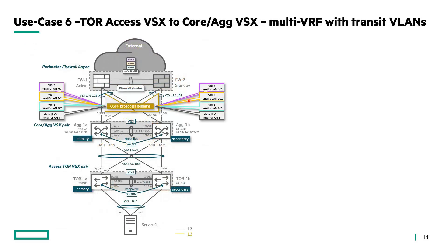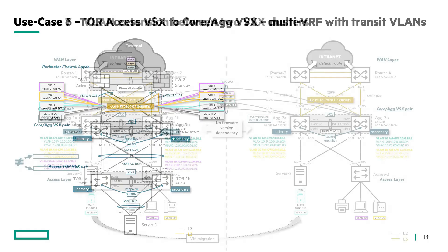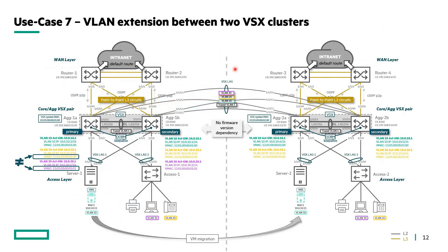The next use case covers a data center two-tier architecture with a top-of-rack VSX connected to a VSX core and aggregation layer, with multiple VRFs and transit VLANs terminating to a firewall upstream node. Finally, a configuration that has been used heavily by mid-sized customers is the interconnectivity of two telecom rooms or two data centers with a VSX back-to-back configuration.